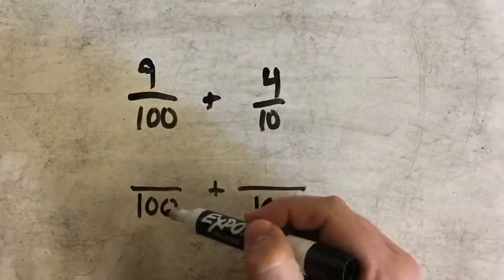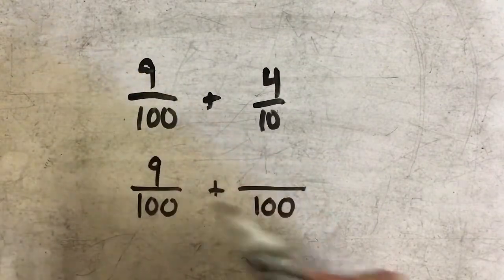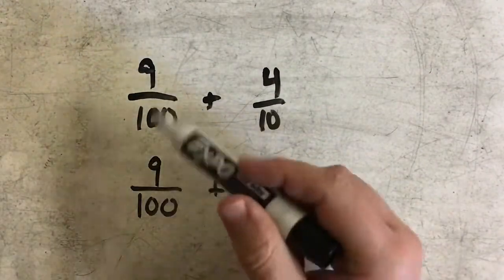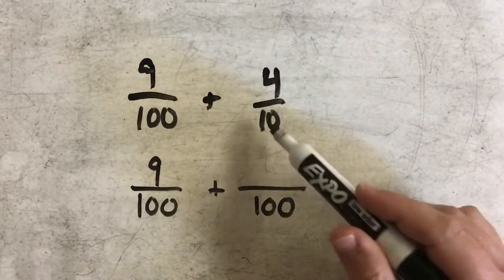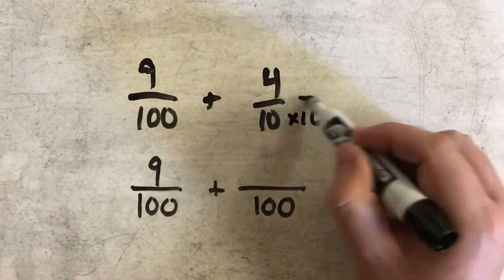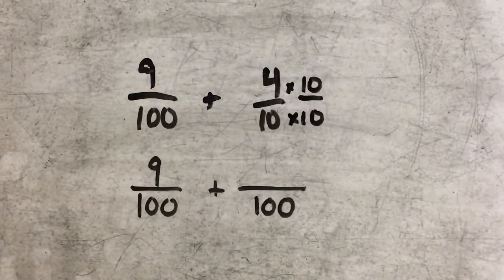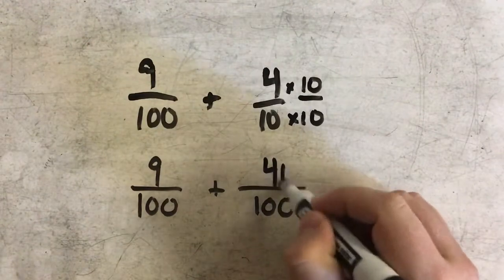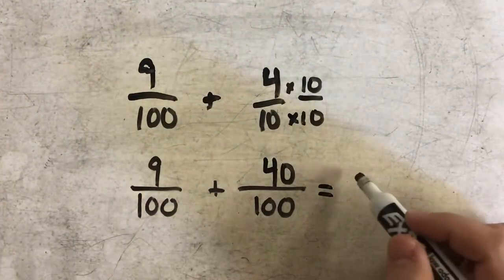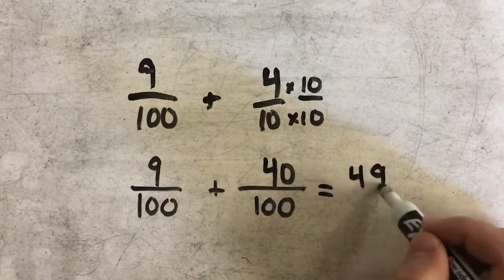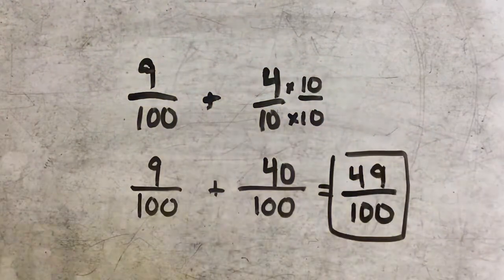To get from this 100 to that 100, I did nothing, so I'm going to do nothing to my numerator — 9 would just stay the same. That fraction didn't change at all. However, this fraction did change: I changed from 10 to 100 by multiplying by 10, so I also need to multiply my numerator by 10. 4 times 10 gives me 40. Now all I need to do is add my numerators, 9 and 40, which gives me 49. My denominator stays the same, and my answer is 49 hundredths.